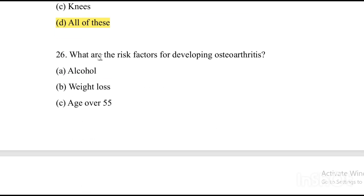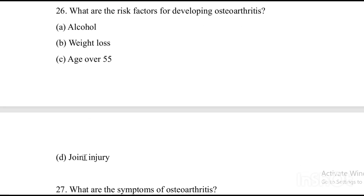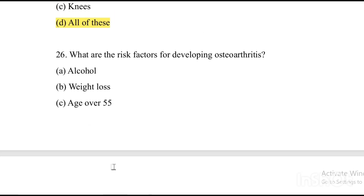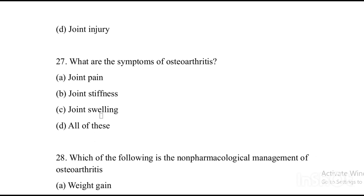Next question: What are the risk factors for developing osteoarthritis? Option A: alcohol. Option B: weight loss. Option C: age over 55. Option D: joint injury. The answer is Option C — age over 55 is a risk factor for osteoarthritis.